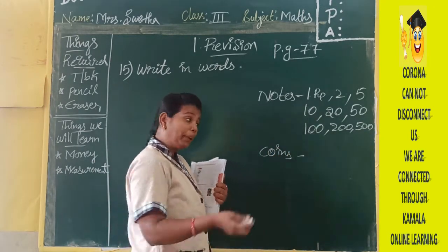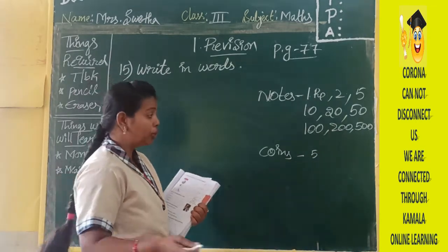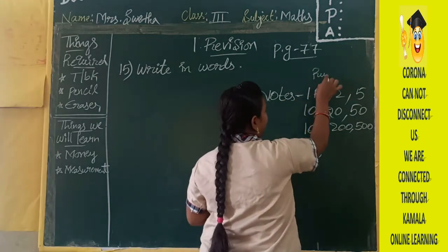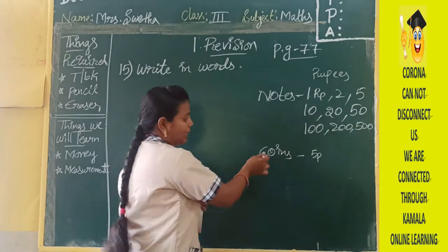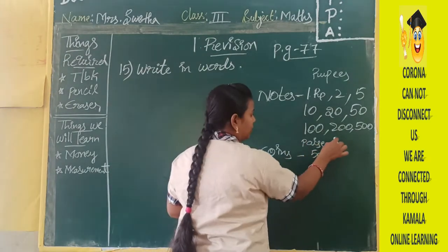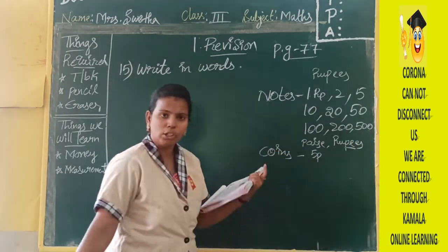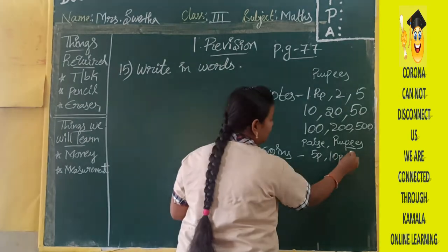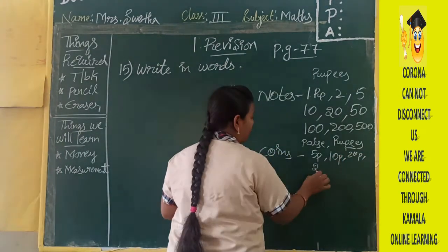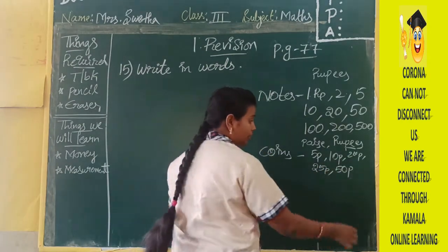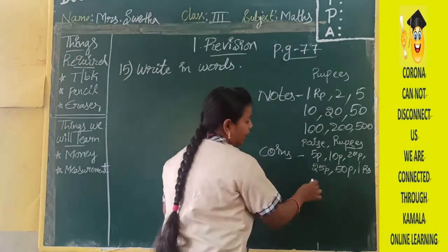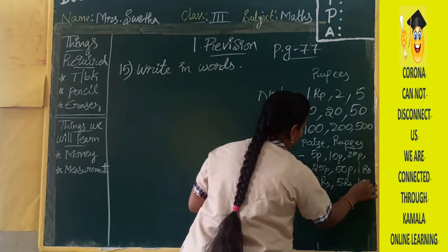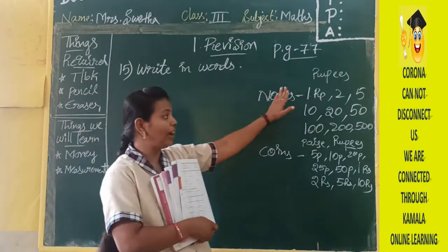Now, coins. Previously, many years ago, coins used to have five pies also. Coins can be of pies and rupees, while notes are of only rupees. Previously we had five pies, ten pies, twenty pies, twenty-five pies, fifty pies. Now there are very few. Then one rupee, two rupees, five rupees, ten rupees coin also you have. So, these are the different values of notes and coins.